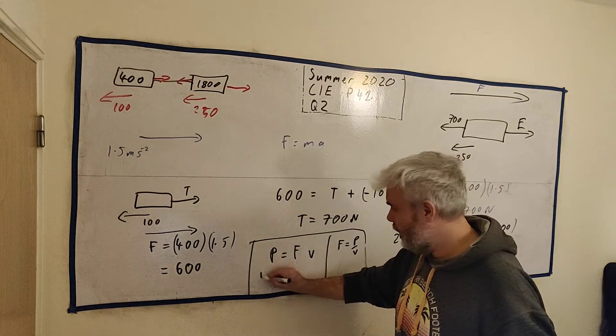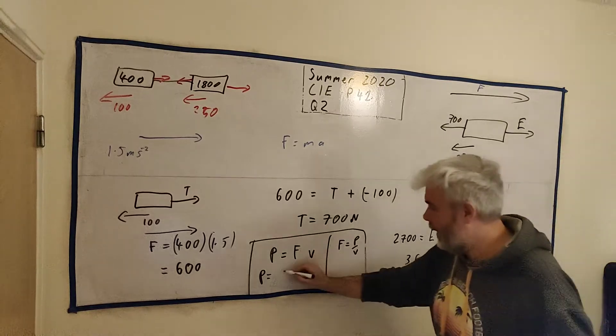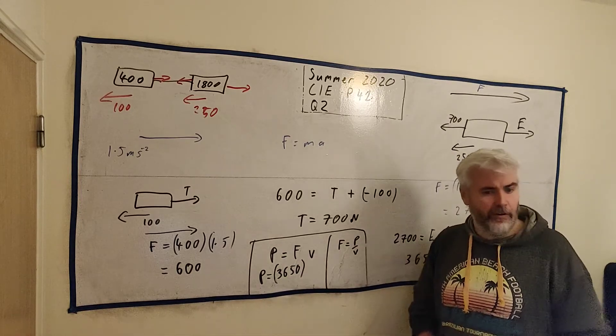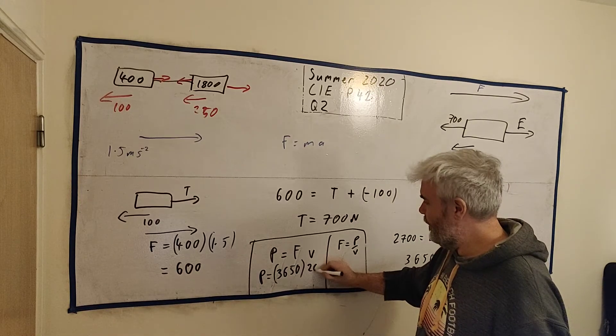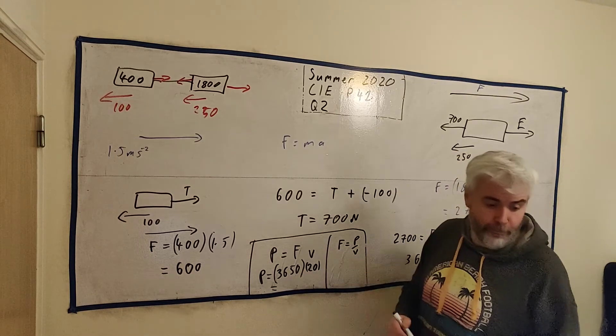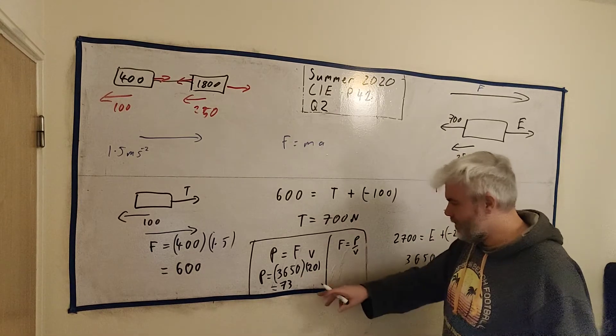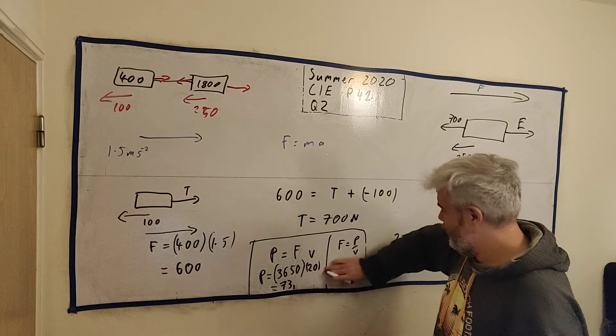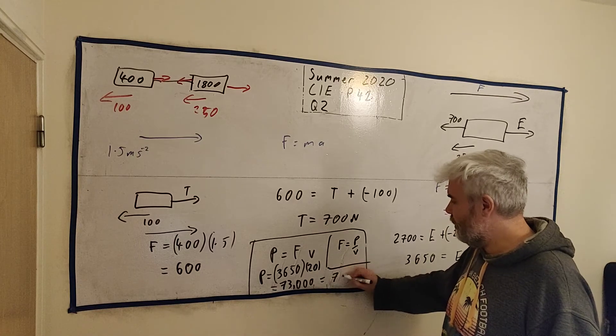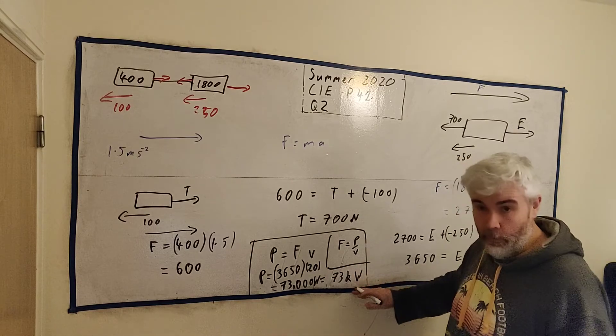In this case, they asked for power. They want P. We know what F is. We figured it out. The engine must be pulling at 3,650. And they told us what V is. Is it in the correct units? It is meters per second. They told us this is 20. So the overall power, if I multiply it together, is 73,000. So 73,000 watts, or you could write that as 73 kilowatts. Always remember the units.